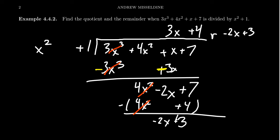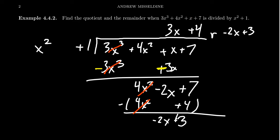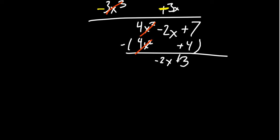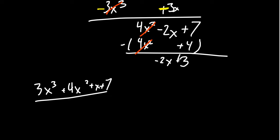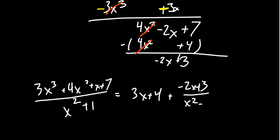We record our answer as follows: our quotient is 3x plus 4, and our remainder is negative 2x plus 3. I like to write the answer showing that 3x cubed plus 4x squared plus x plus 7 over x squared plus 1 equals 3x plus 4, our quotient, plus the remainder negative 2x plus 3 over the divisor x squared plus 1.